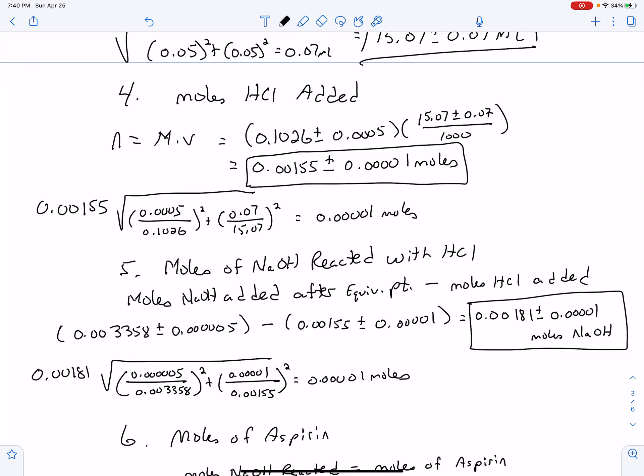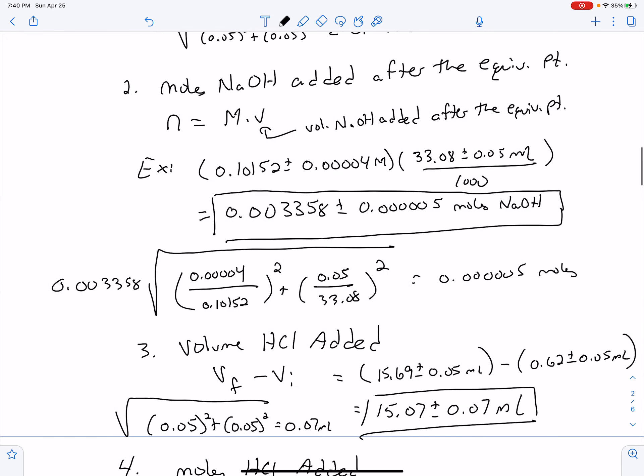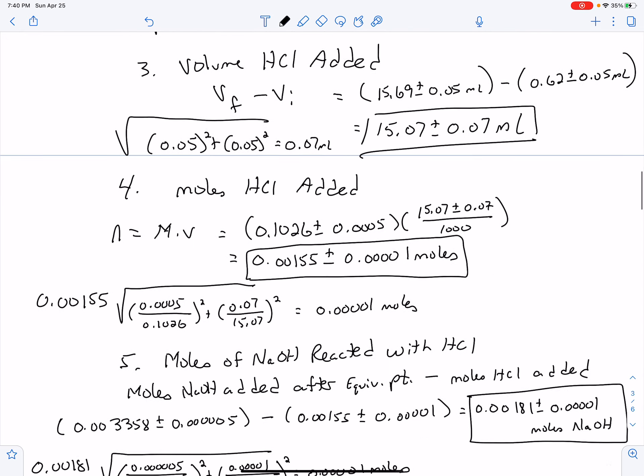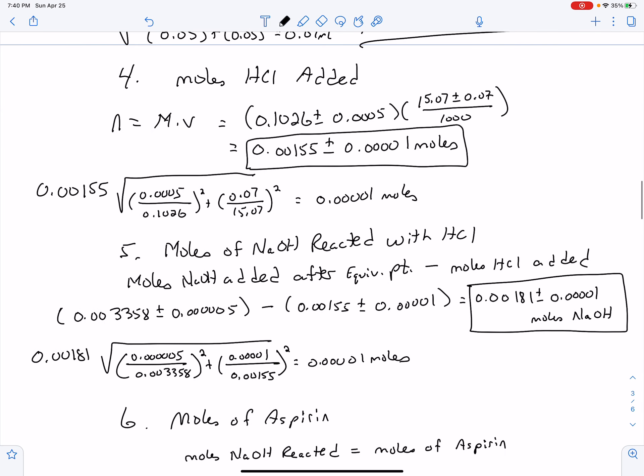So then how much of the NaOH actually reacted? I took the total number of moles after the equivalence point, this is number two, and I subtracted the moles of HCl, this is number four. So when I take the moles of NaOH minus the moles of HCl, I got 0.00181 plus or minus 0.0001 moles. So that was my moles of NaOH that weren't there because they were neutralized during the heating or reacted during that heating process. You can see how I found that, you can see the numbers that I got, you can see the calculation for that uncertainty. You can match those up to where they come from in the problem itself.